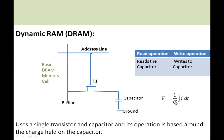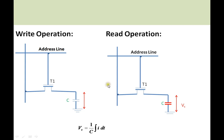Coming to dynamic RAM memory, bits are stored using a transistor and a capacitor. The number of switches used for storing one bit is very less compared to SRAM — only one transistor and one capacitor are used. Whenever a bit needs to be written, the capacitor needs to be charged, and whenever the bit needs to be read, the capacitor needs to be discharged.